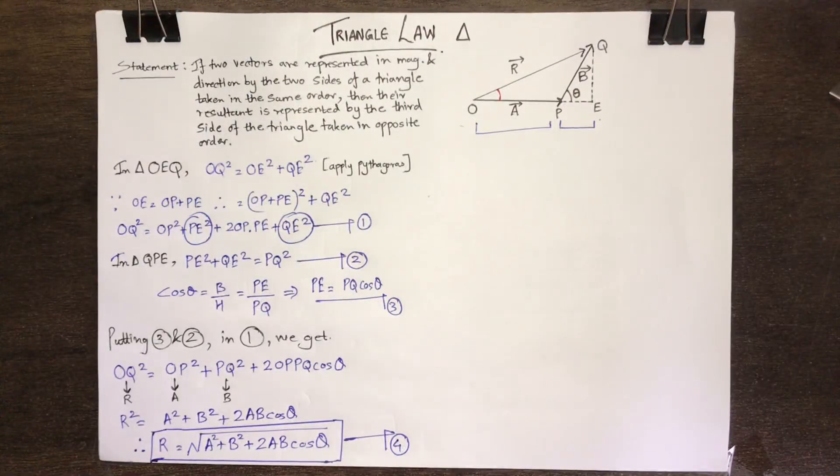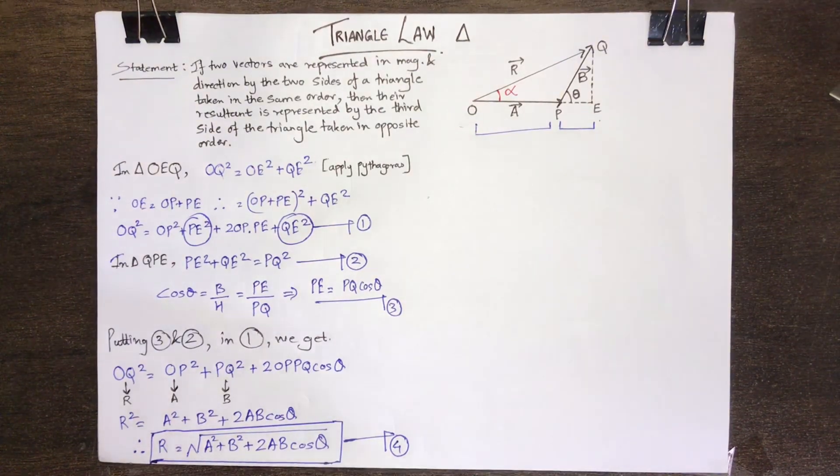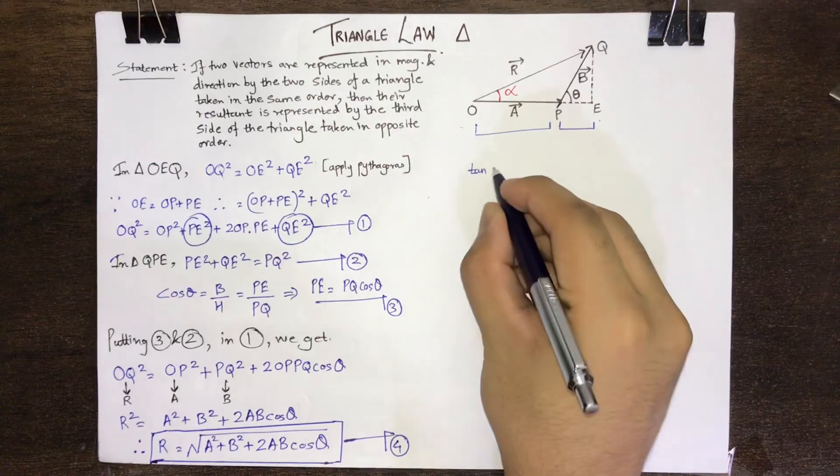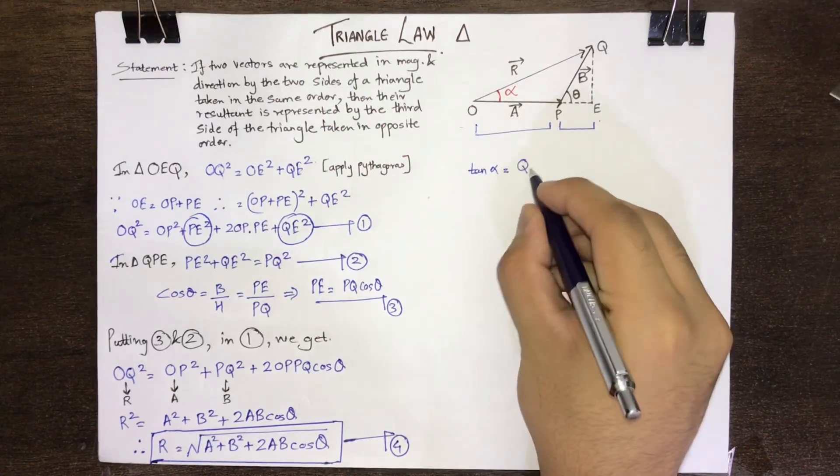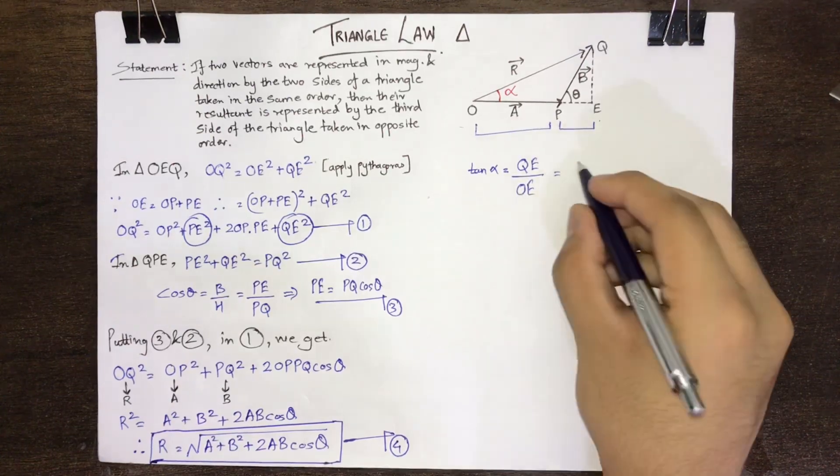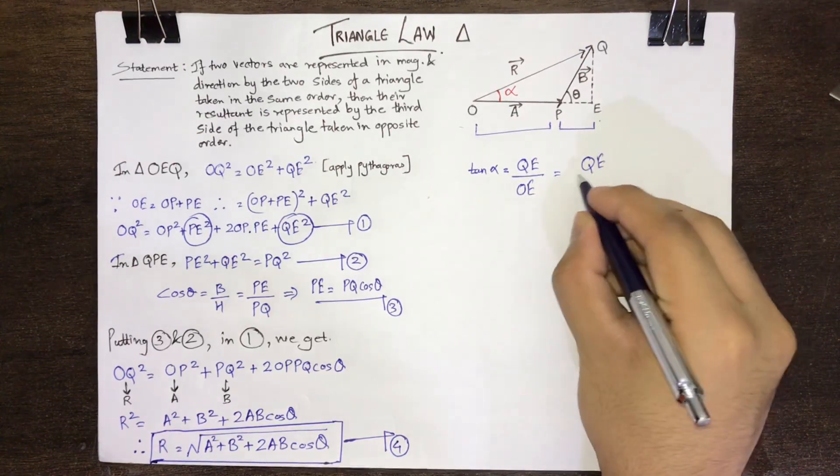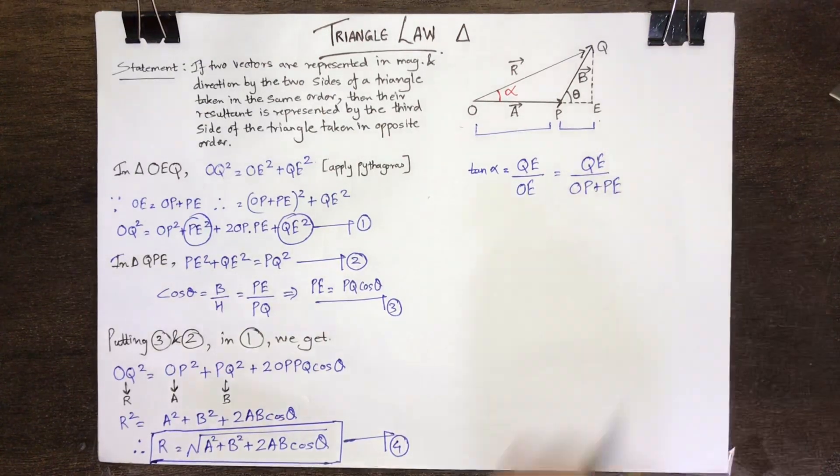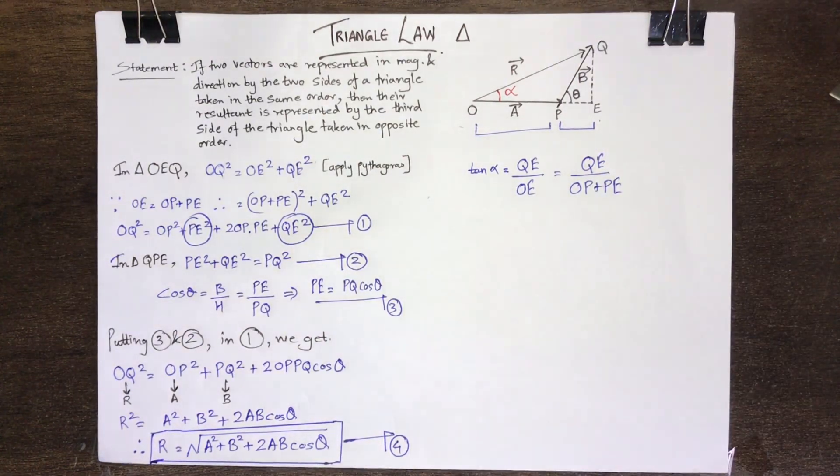Now to find out the direction of the resultant, suppose the resultant R vector makes an angle alpha with the direction of the vector A. Then tan alpha is equal to perpendicular upon base, which is equal to QE upon OE. As OE is equal to OP plus PE, therefore tan alpha will be equal to QE upon OP plus PE.